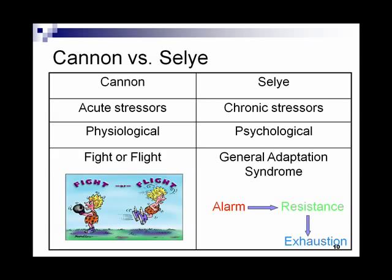This slide provides a general overview of the differences between Cannon and Selye's work. Cannon's older work focused on acute stressors that were physiological in nature, while Selye focused much more on the chronic, everyday stressors that are psychological in nature that we tend to see today.